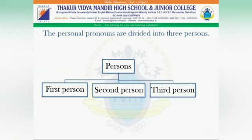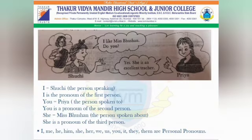The personal pronouns are divided into three persons: first person, second person and third person. Look at this picture. There is a girl named Suchi. She says, 'I like Miss Bhushan. Do you?' Here, 'I' is the first person pronoun — who is 'I'? Suchi, the person speaking. She says, 'I like Miss Bhushan. Do you?' Who is 'you' here? Priya. 'You' is the second person pronoun — the person spoken to.